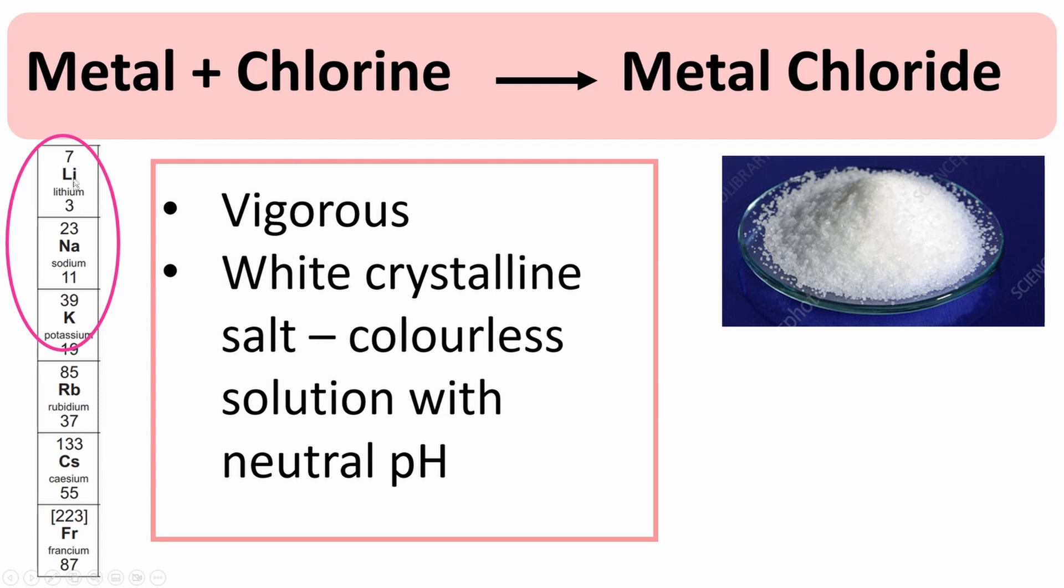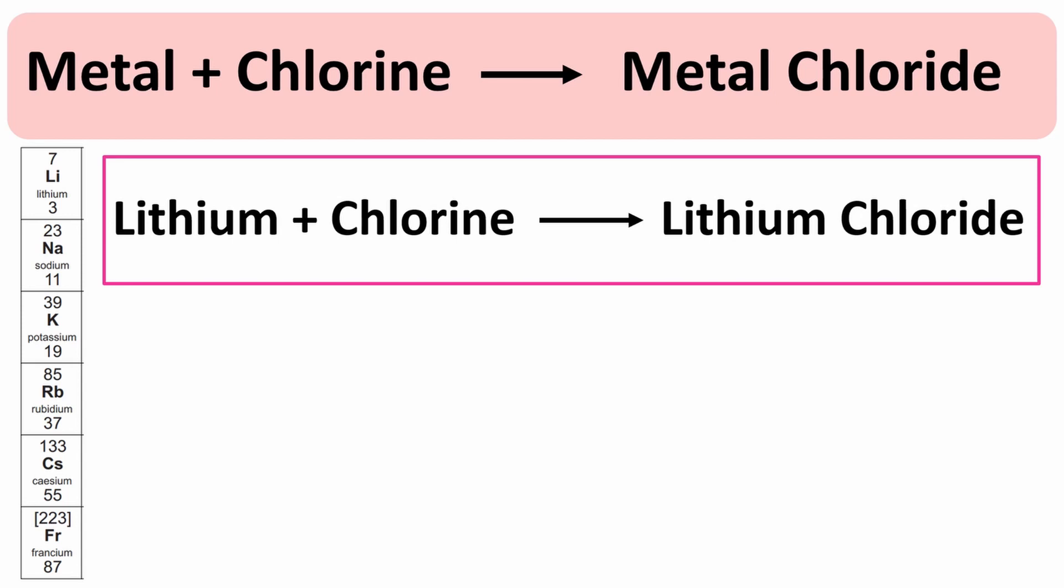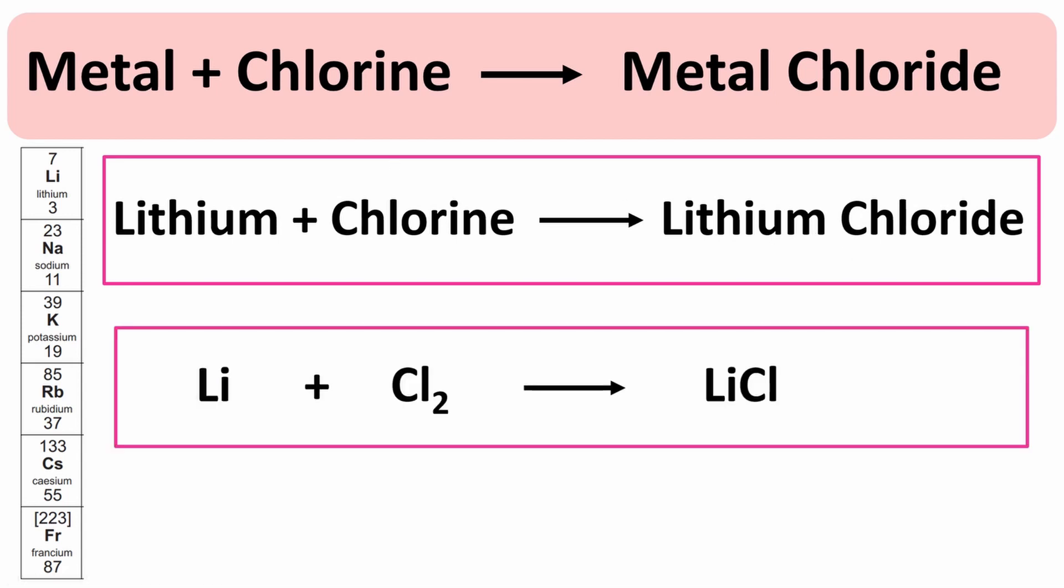We're going to go through the word and symbol equations for these three alkali metals reacting with chlorine. Let's start with the first one, lithium. This is your word equation: lithium plus chlorine react together to form lithium chloride. Now the symbol equation, this is the unbalanced symbol equation, we need to balance this.